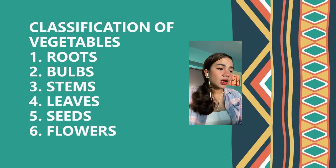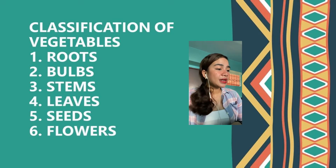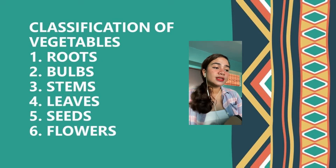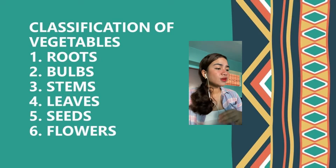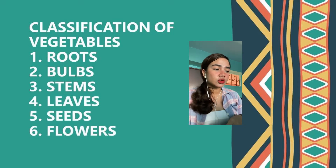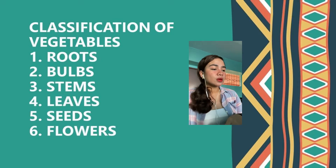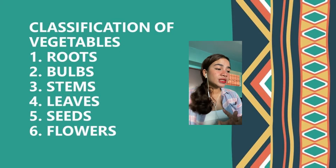Next, we have stems. Examples of stems are celery, bamboo shoots, and asparagus. Next, we have leaves. Examples of leaves are spinach and lettuce. Next, we have seeds. Examples of seeds are beans, corn, and peas.